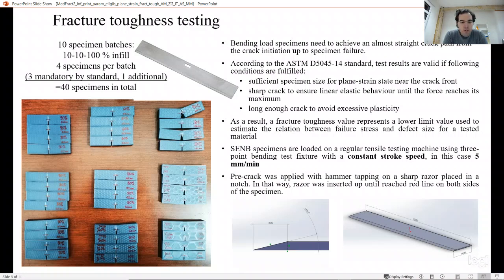All the specimens you see on the left-hand side, 9 batches, are all labeled so we didn't have concern which one is which. On the notch, we created red lines on the front surface and on the back indicating how long the pre-crack should be. The pre-crack we inserted using a razor blade. We placed the razor blade in the notch and created the pre-crack with hammer tapping on that razor blade. The pre-crack length was about 2 mm to 3 mm.